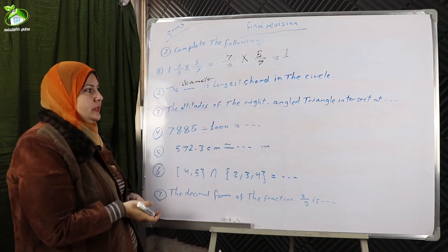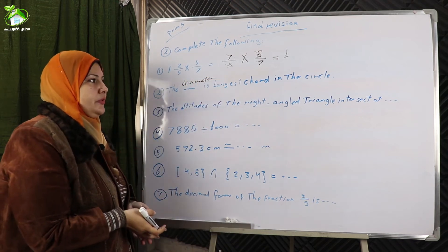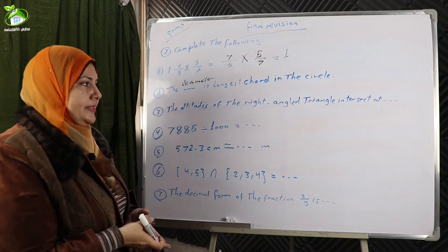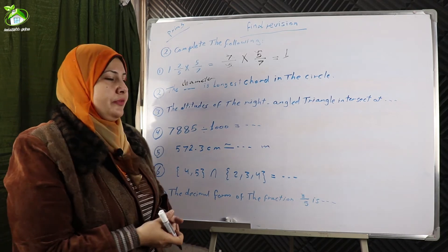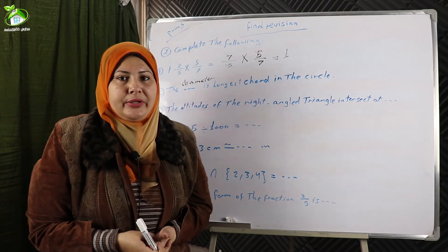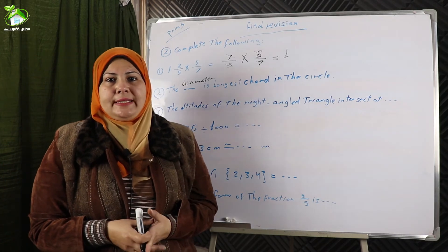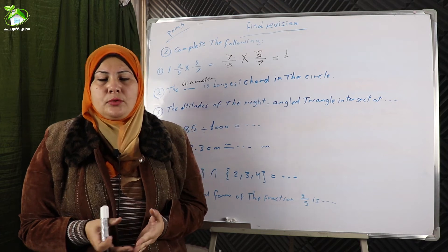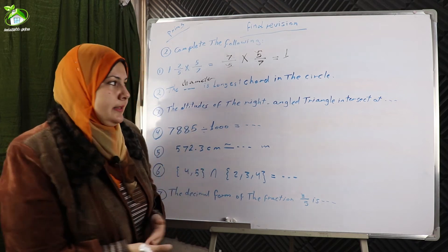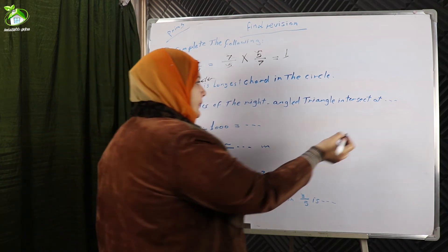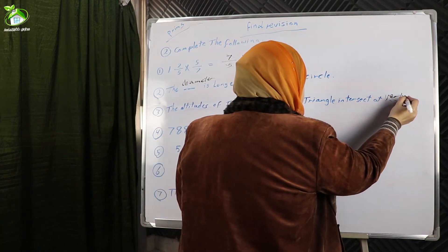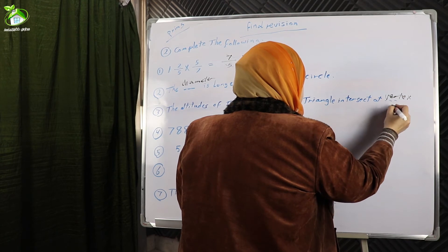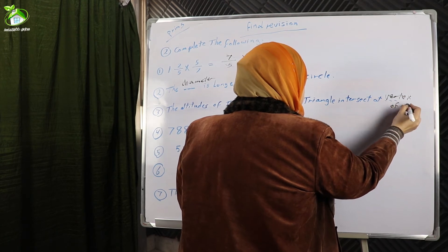Number three: the altitudes of a right-angled triangle intersect at the vertex of the right angle.